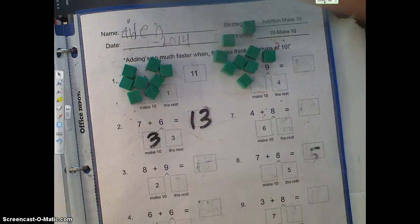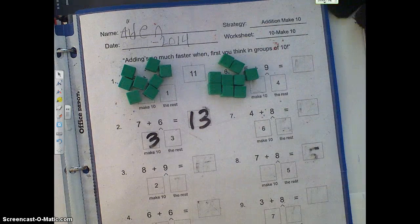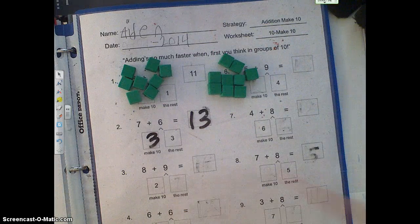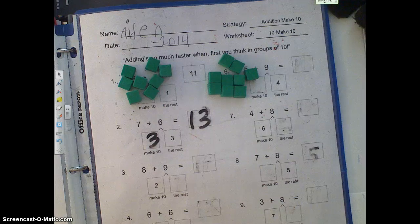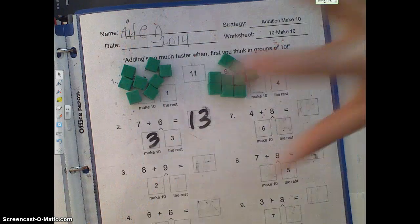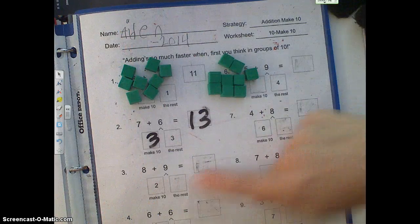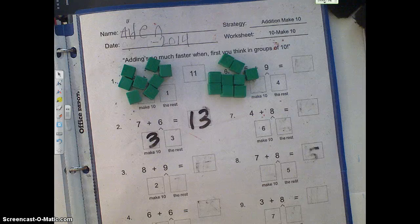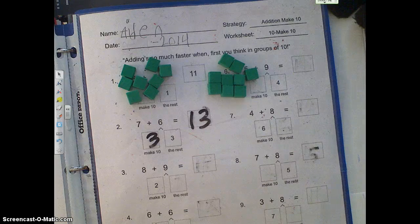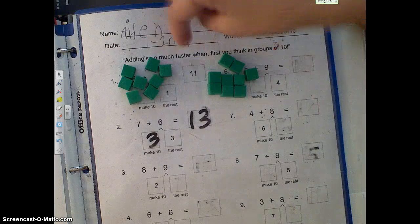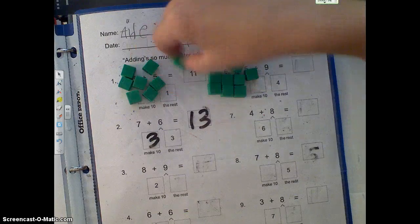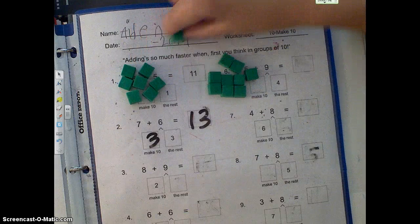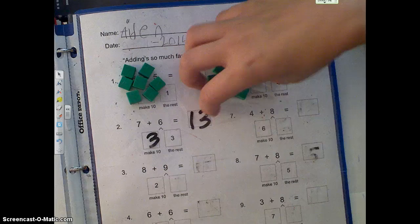Now, the way that we do this in class is what? What do we always say? Whenever we're trying to make 10 with our adding, we connect them. We connect them. And which one do we connect? Do we connect the 8 or the 9? The 9. The 9, why? Because that one is closer to 10. It's closer to 10 and it's easier for us to add really quickly. So we take one of these over here from the 8 and put it over here.